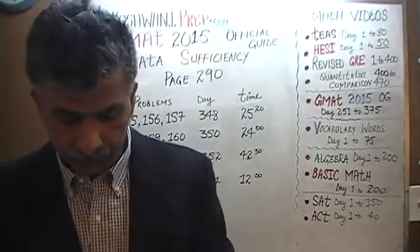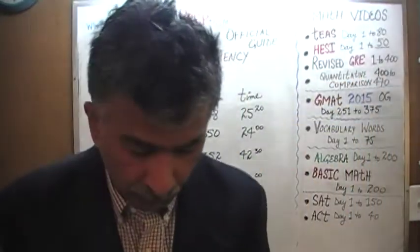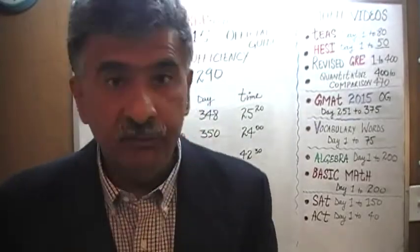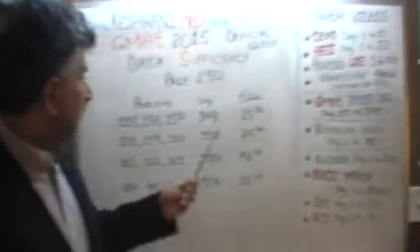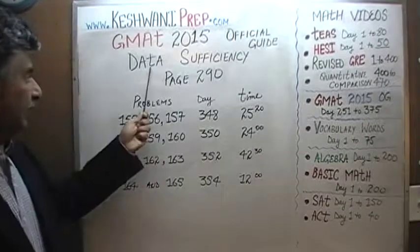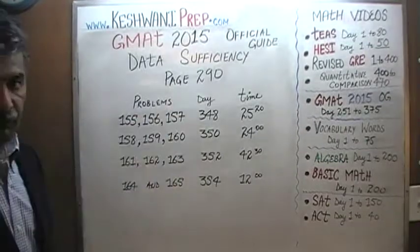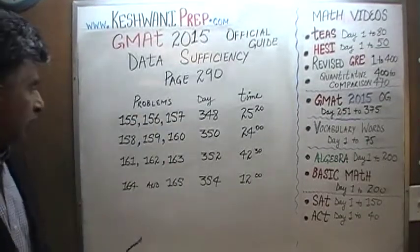Since we have already solved every single math problem from the 13th edition, I am not going to redo the problems. I am going to simply tell you where you will be able to find solutions to a given set of problems. Right now, we will look at all the data sufficiency problems appearing on page number 290.